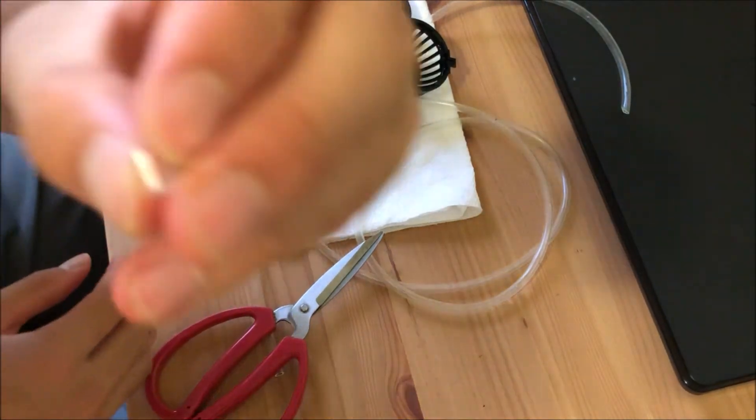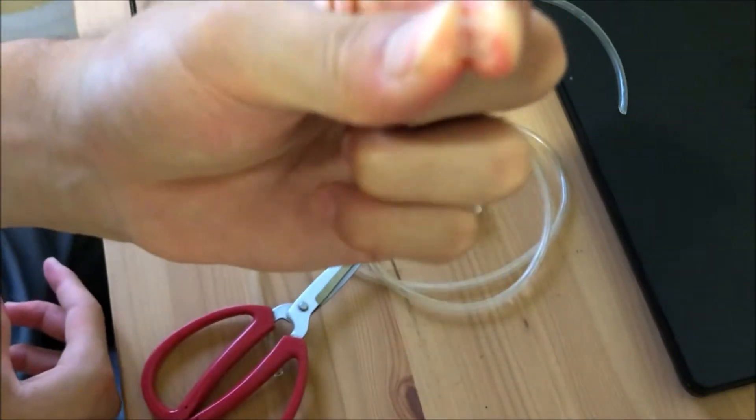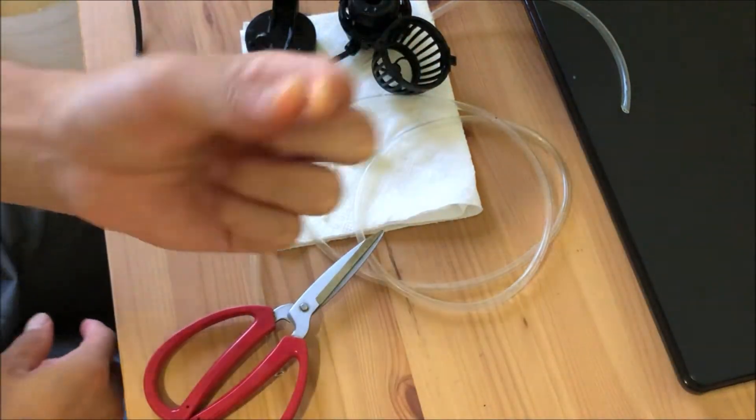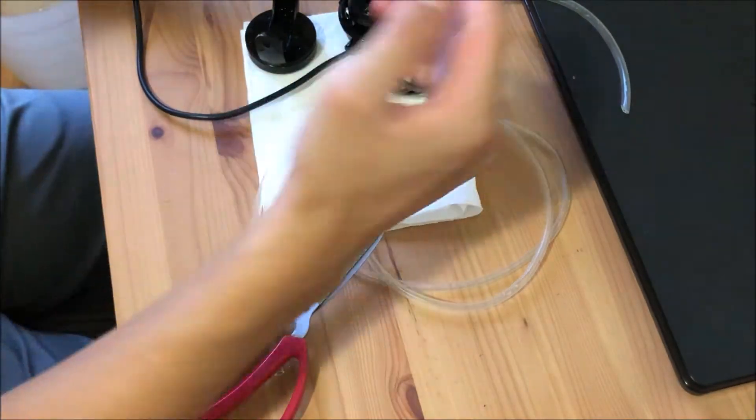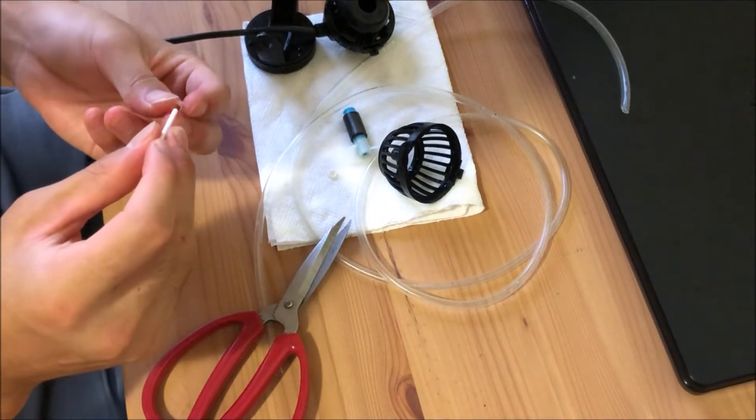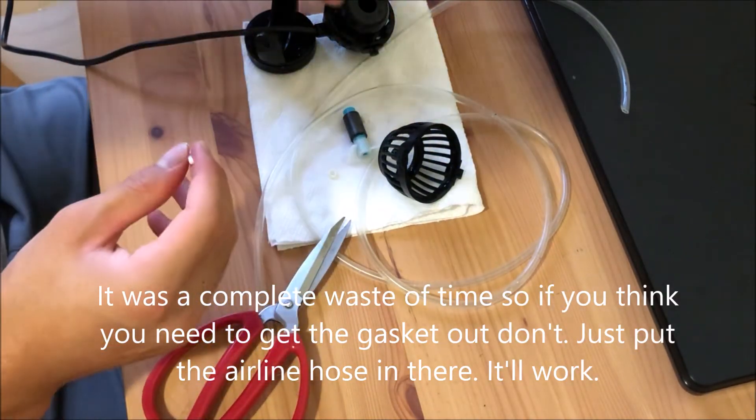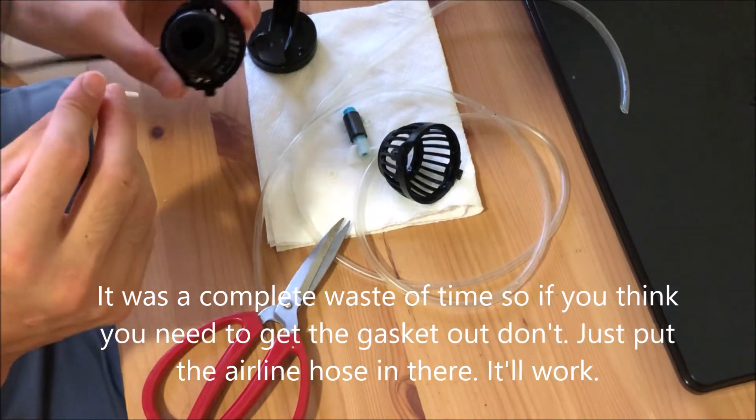Okay, so from what I've seen, a little piece this big should be enough. So we're going to put it all back together. Alright guys, so now we're just going to try to put this airline hose, it should fit like this. But I think I need to get the rubber gasket out first.